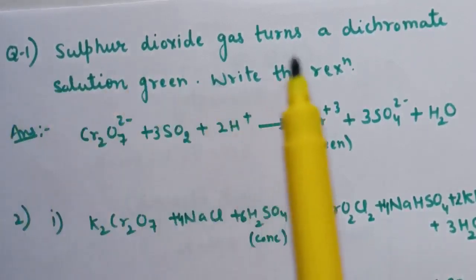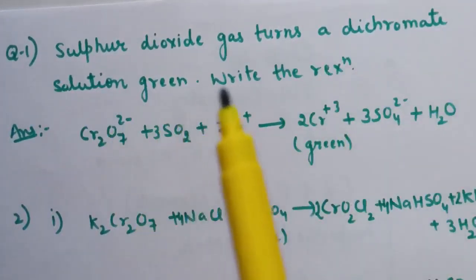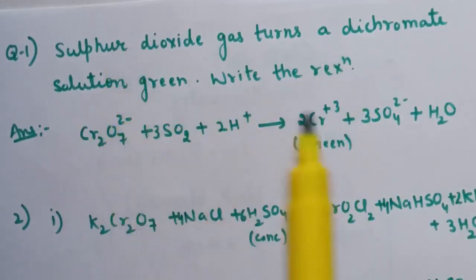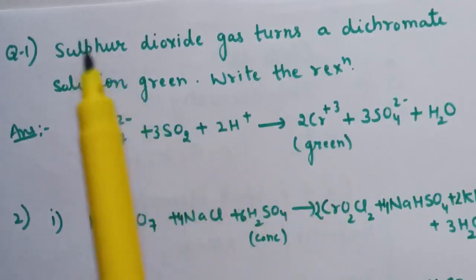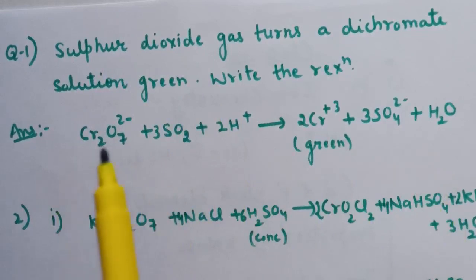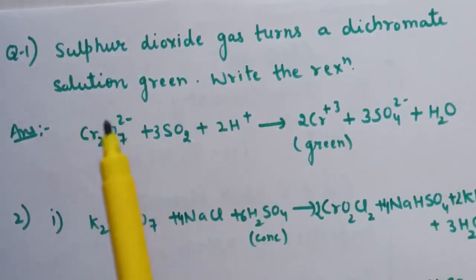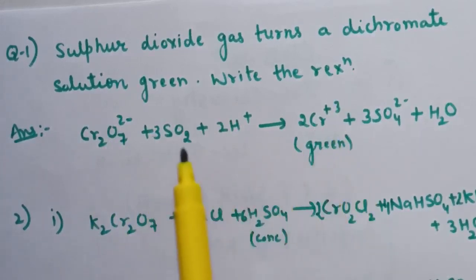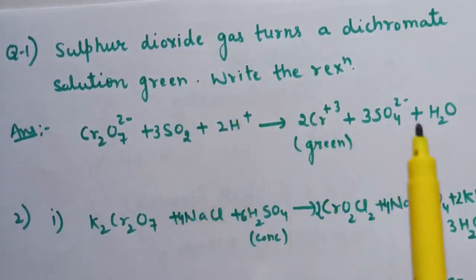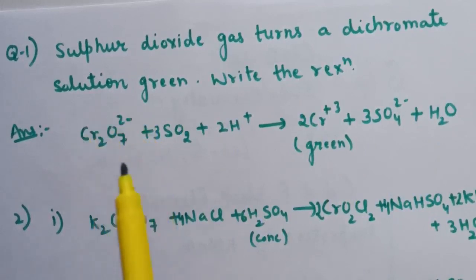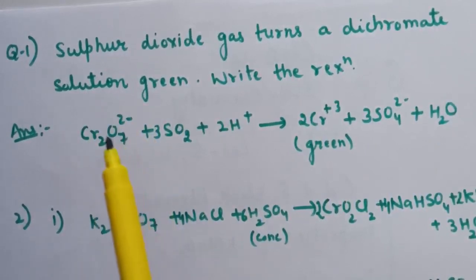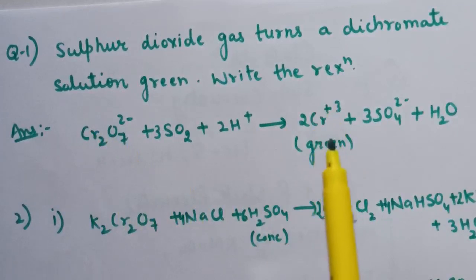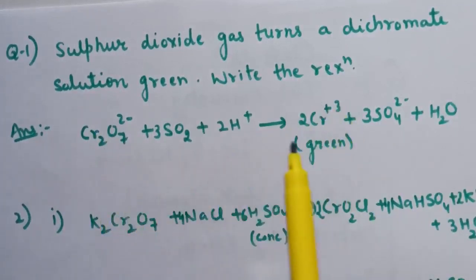First question: sulfur dioxide gas turns a dichromate solution green — write the reaction. The answer: dichromate solution converts to green color when sulfur dioxide is passed. In the reaction, Cr₂O₇²⁻ (dichromate ion) converts to chromium +3 ions, which are green in color, while sulfur dioxide is oxidized to sulfate ion. The dichromate ion acts as an oxidizing agent: it oxidizes SO₂ to sulfate ion and itself reduces to Cr³⁺ ion, making the solution green.